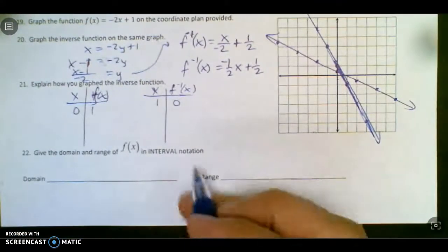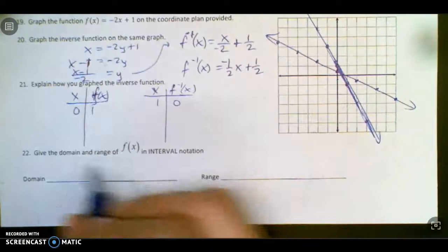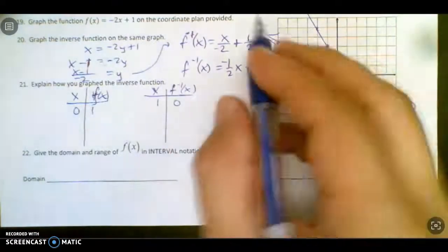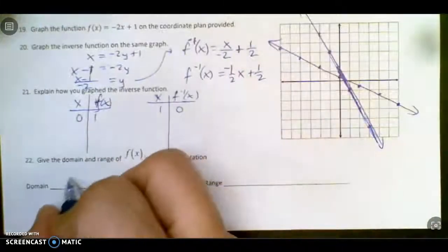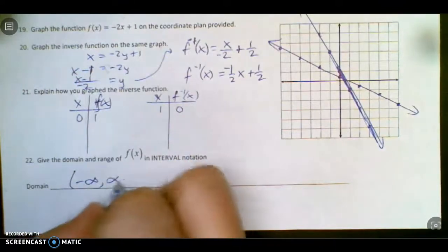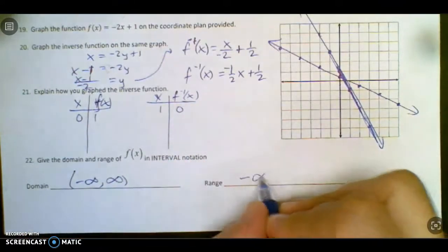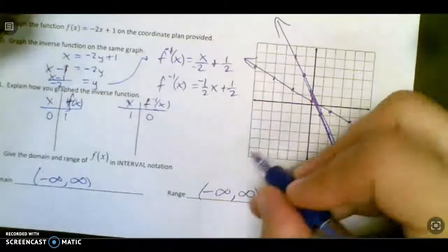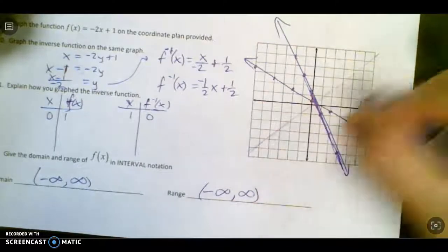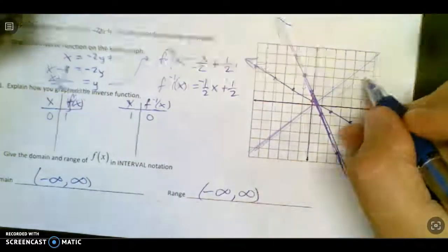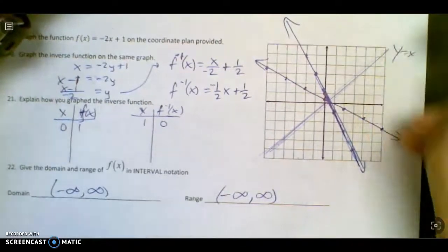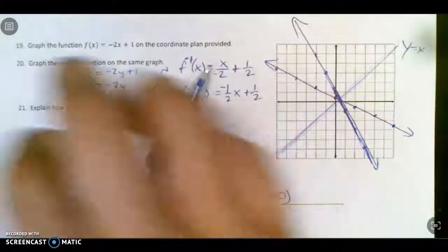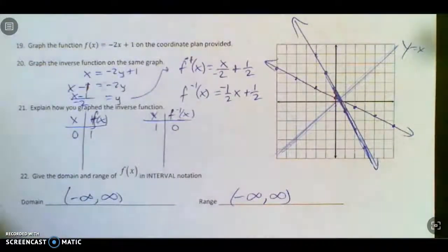Give the domain and range of f of x in interval notation. Well, it goes forever to left and right. So there's your forever, and there's your forever. It wasn't too interesting. But one other way to tell you graph this well is to put in that y equals x line and see if it looks like it's flipped over. Hope that helps. Good luck. Study hard. See you later.